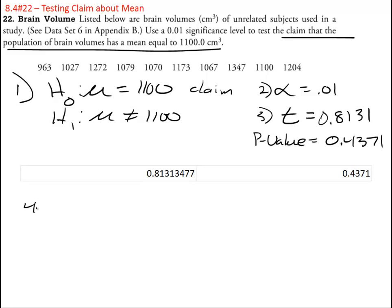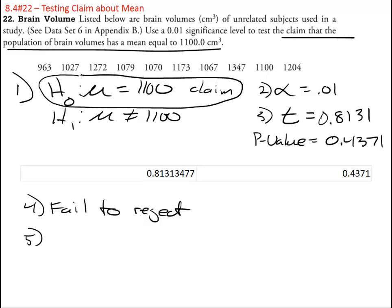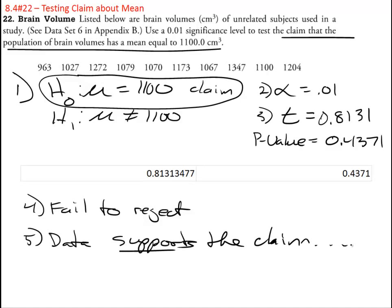So step 4, fail to reject because that's a huge p value. And because we fail to reject that means we're kind of stuck with the null because we didn't reject it. So data supports the claim.